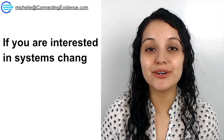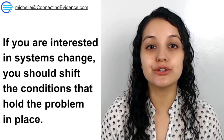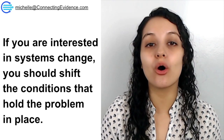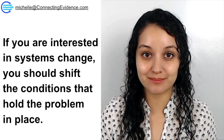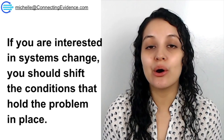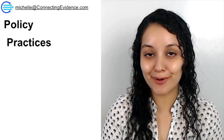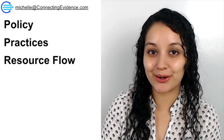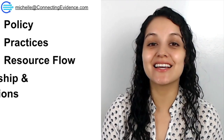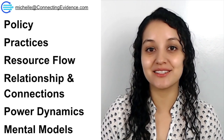This article argues that if you're interested in doing systems change, you should shift to conditions that hold the problem in place. These six conditions or levers are: policies, practices, resource flows, connections and relationships, power dynamics, and mental models.